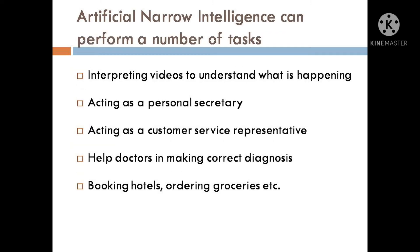Narrow Artificial Intelligence can perform a number of tasks like interpreting video to understand what is happening — for example, a video of the roof of the house for identifying repair needs. It can also act as a personal secretary for organizing personal and business calendars, making appointments, scheduling meetings, etc.